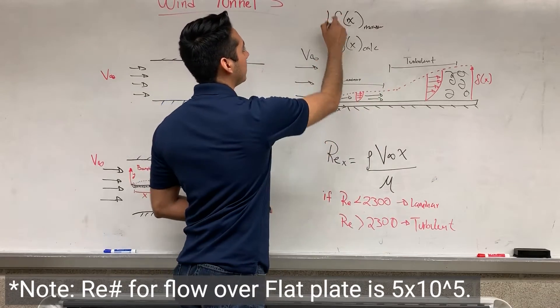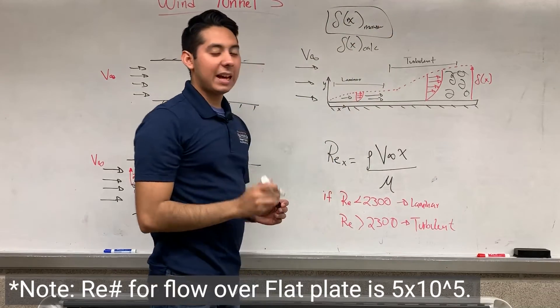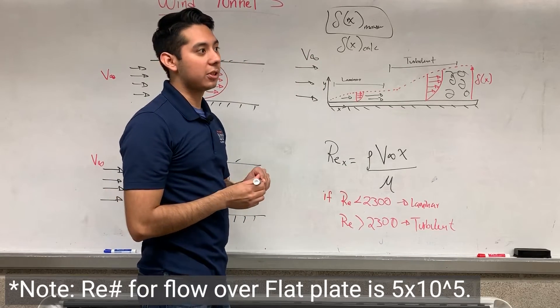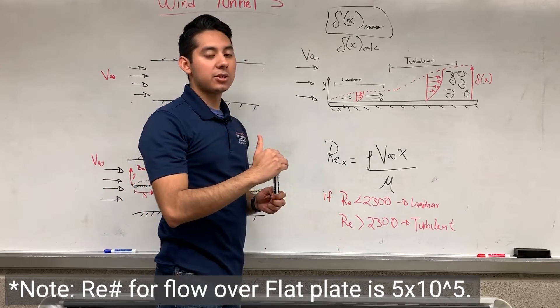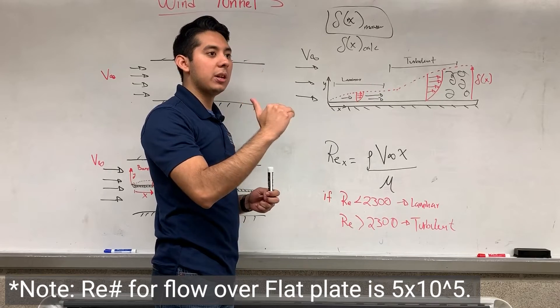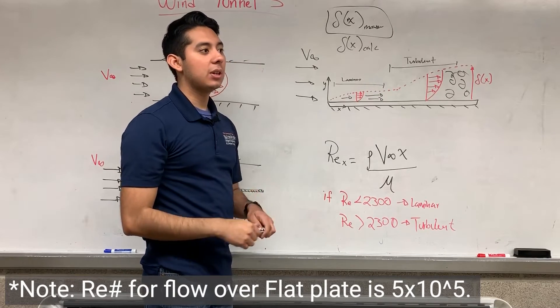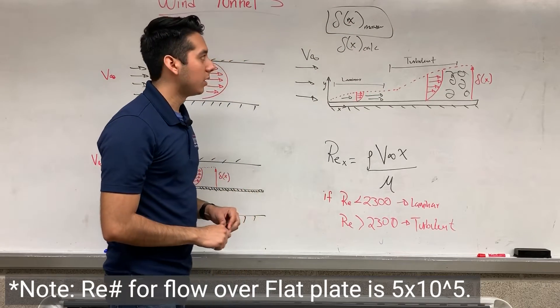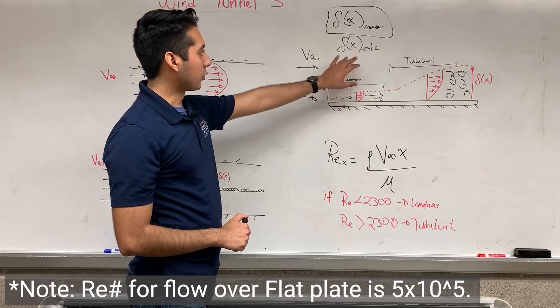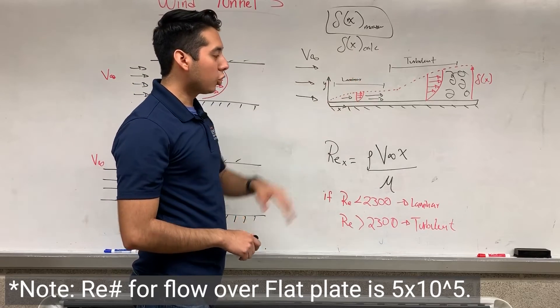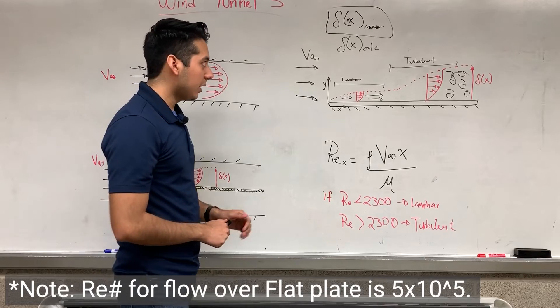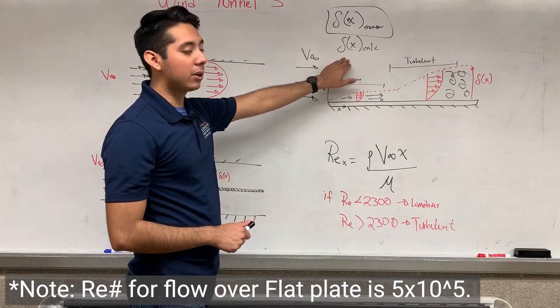The delta measured will be the height at which you started getting all five constant pressures. So if you are at five millimeters and then you started getting from that point the same pressure those five times, that will be your delta measured that you're going to write down in your notebook. For the delta calculated, you will use the other formulas that appear in your procedures. There's two of them: one for laminar and one for turbulent.